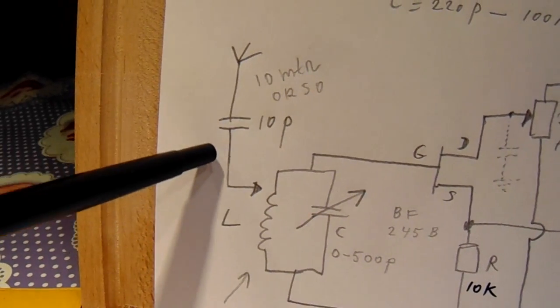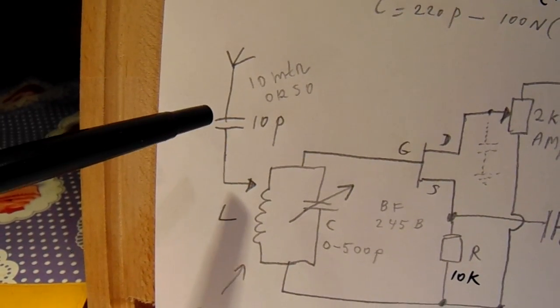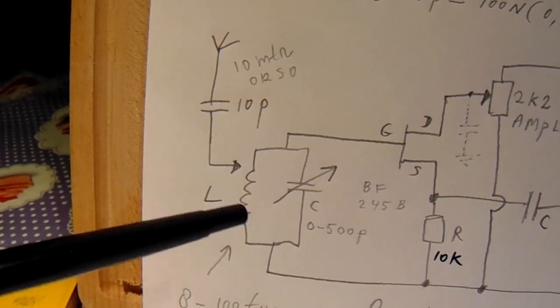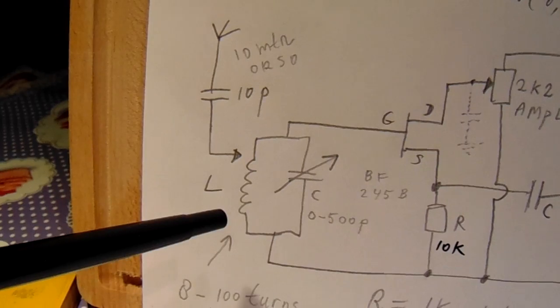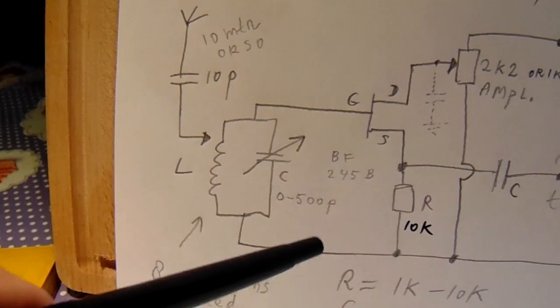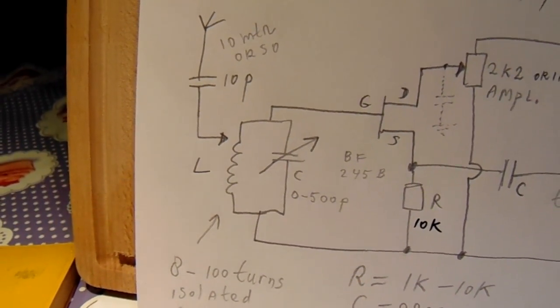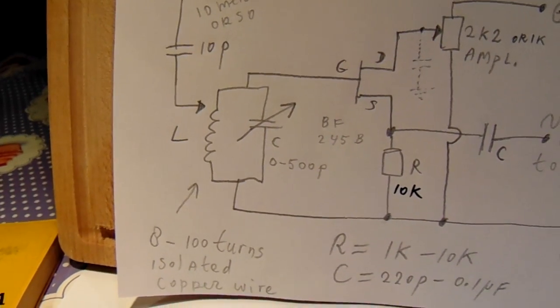When you don't use this capacitor here, the whole receiving from all kinds of stations will be very messy. So this capacitor sets, in fact with this tank circuit, the frequency band where you receive your radio stations.